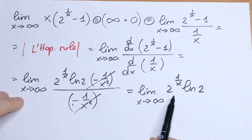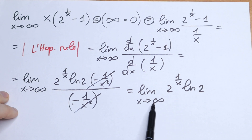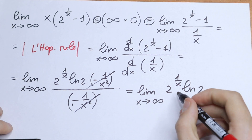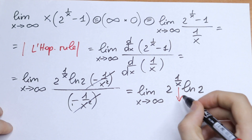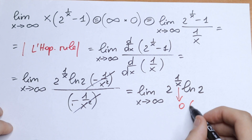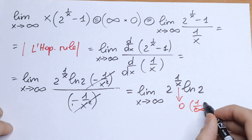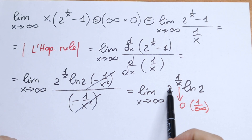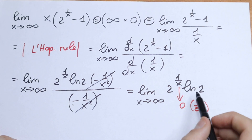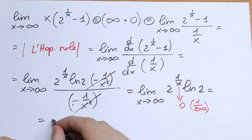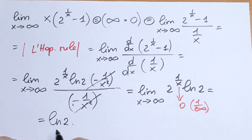As a result, we have the limit as x approaches infinity of 2 to the power 1 over x times natural log 2. If we plug in infinity, 1 over x goes to 0, so 2 to the power 0 equals 1, and we are left with only natural log 2. So our limit is equal to natural log 2.